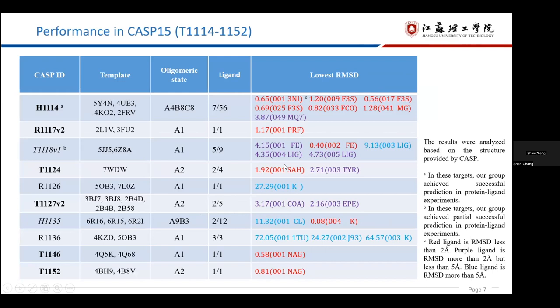Let's look at the performance of our program in CASP15. Here, we use the experimental structures provided by CASP organizers to align and calculate the RMSD of ligands. On the targets displayed in bold format, we successfully predicted almost all the ligand poses. On the targets displayed in italic format, we partially predicted the poses of ligands. At the same time, we show the template PDB structures in the table.